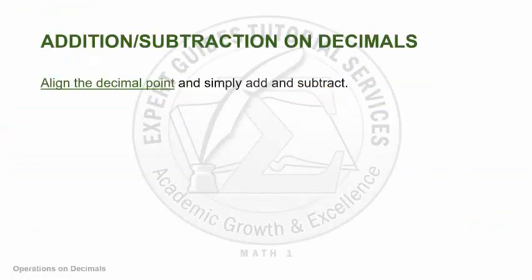In adding and subtracting decimals, the very first thing you have to do is to align the decimal points of whatever decimals you are adding or subtracting in a vertical fashion. After doing so, you simply perform the operation — you either add or subtract. Let's take an example.